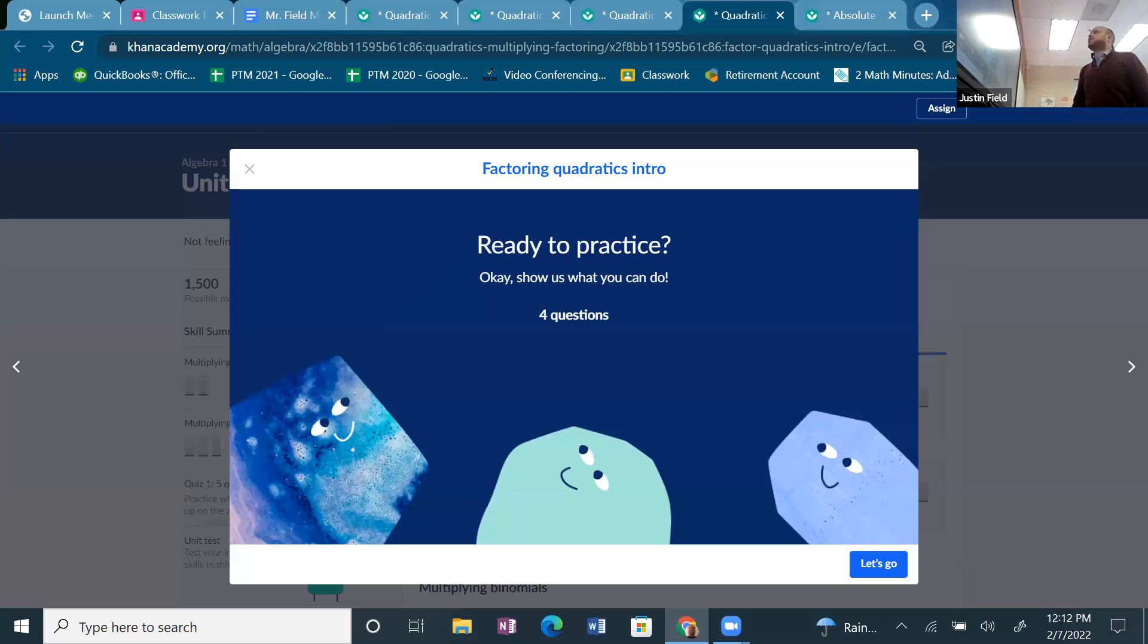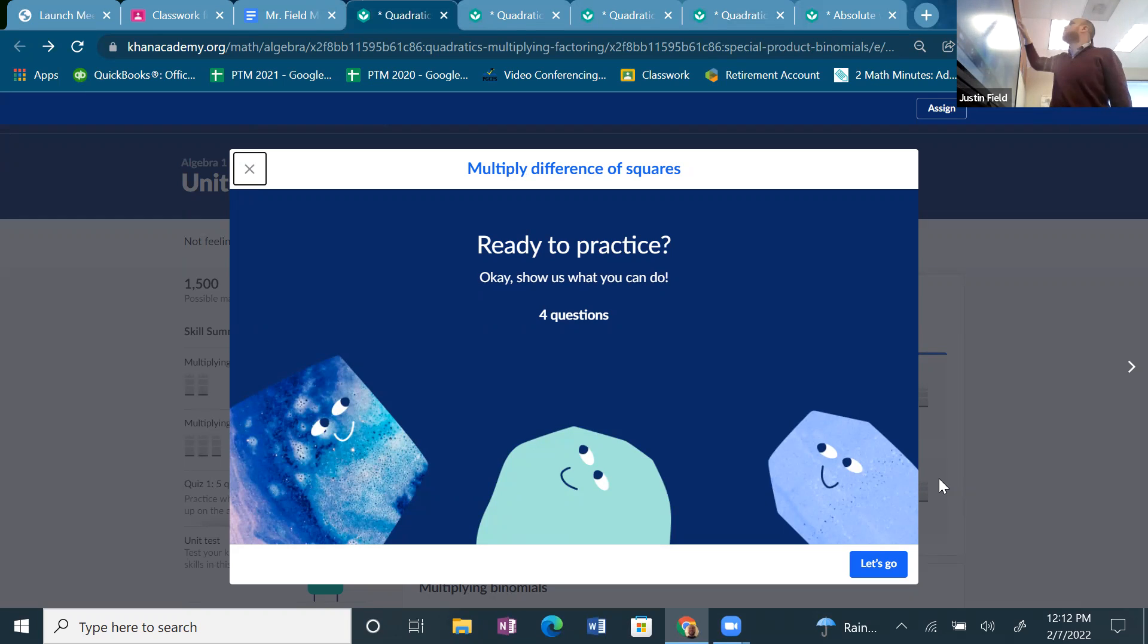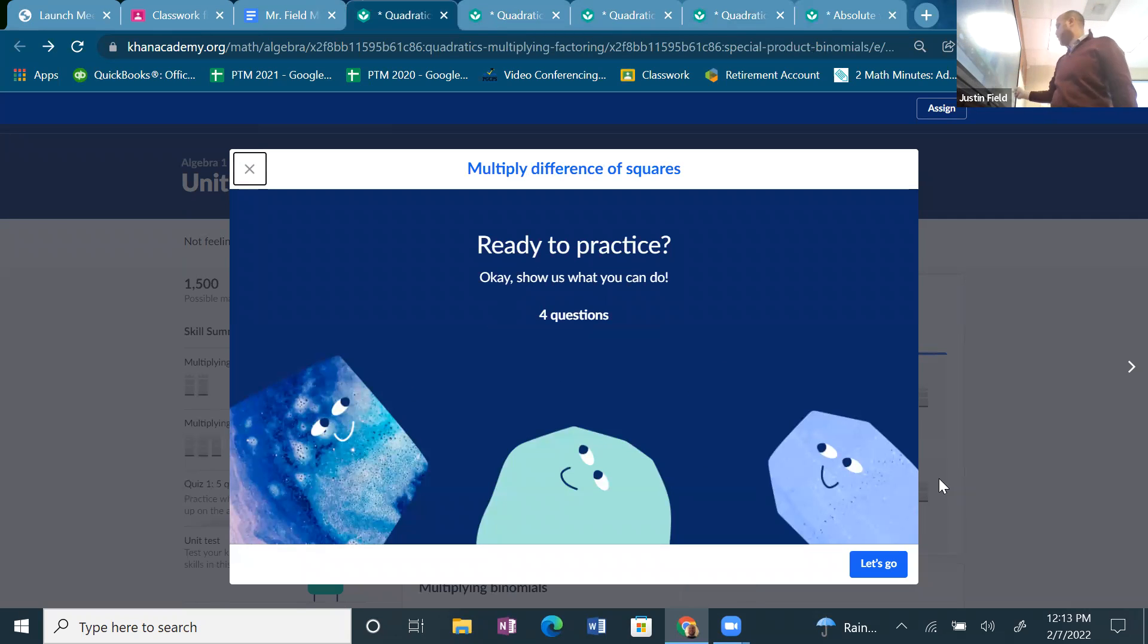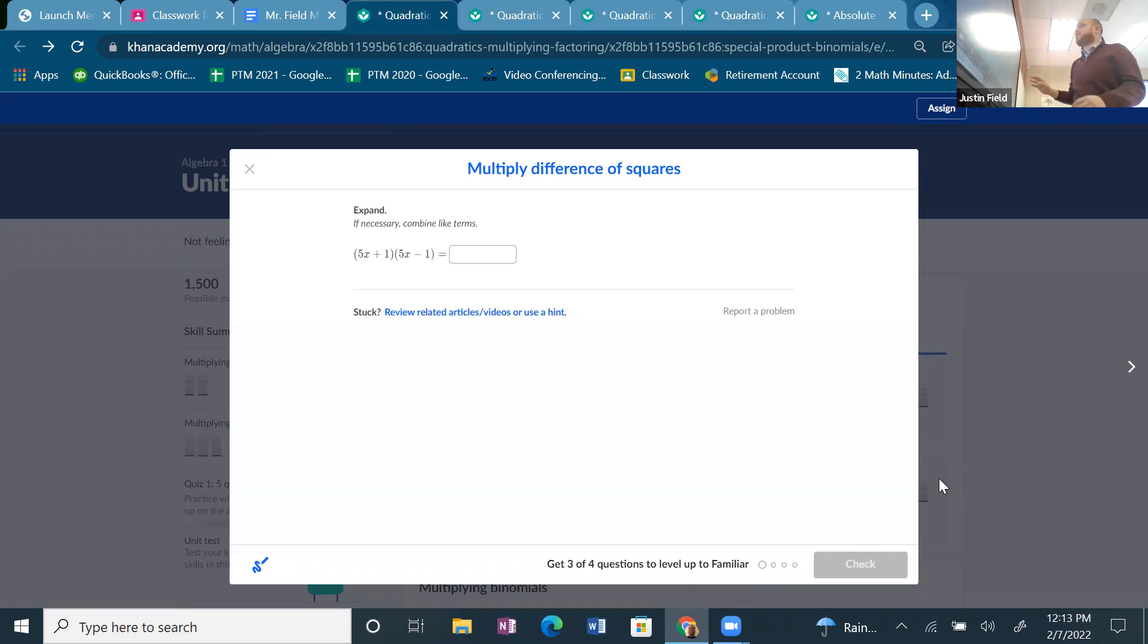All right, let's go. Let's do some algebra. Okay, we're going to start with multiplying difference of squares, perfect squares. We're going to get into some factoring, really do some factoring trinomials, and then absolute value. Remember that? We're going to do some spaced practice. This is going to be great.